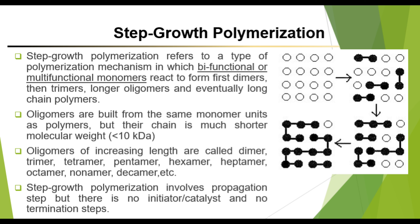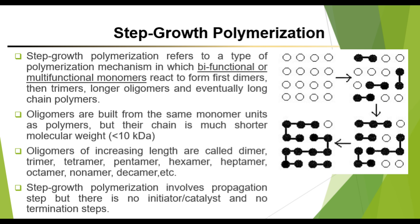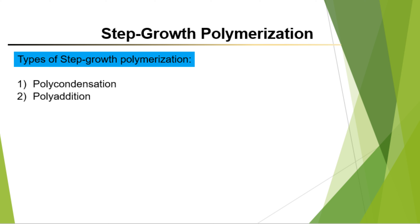Oligomers are shorter polymer chains. One Dalton equals 1/12 times the molar mass of carbon-12, which is 1, and equals 1.66 × 10⁻²⁷ kg. For step growth polymerization, it involves propagation steps but there is no initiator or catalyst and no termination steps. The two types of step growth polymerization are polycondensation and polyaddition.